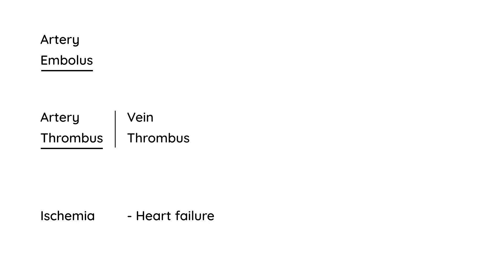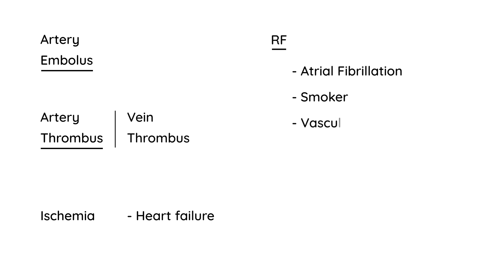In a clinical vignette, look for clues in the patient's history that would suggest mesenteric ischemia. Think of things that predispose someone to developing a clot. For example, atrial fibrillation makes a person more susceptible to developing a blood clot that can travel to one of the mesenteric vessels, such as the superior mesenteric artery. Other risk factors include smoking and established vascular disease.